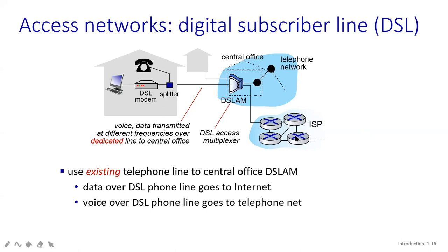There are three key points here. First: use the existing telephone line to the central office DSLAM — you cannot connect directly to anyone; you have to go through your splitter, and then the splitter wired line connects with your central office. Second: the data over this DSL phone line goes to the internet. From here it goes to the splitter, then connects with your DSLAM and directly to your routers. So the data, if you are sending from any digital device or telephone line, goes directly to your routers or internet network.